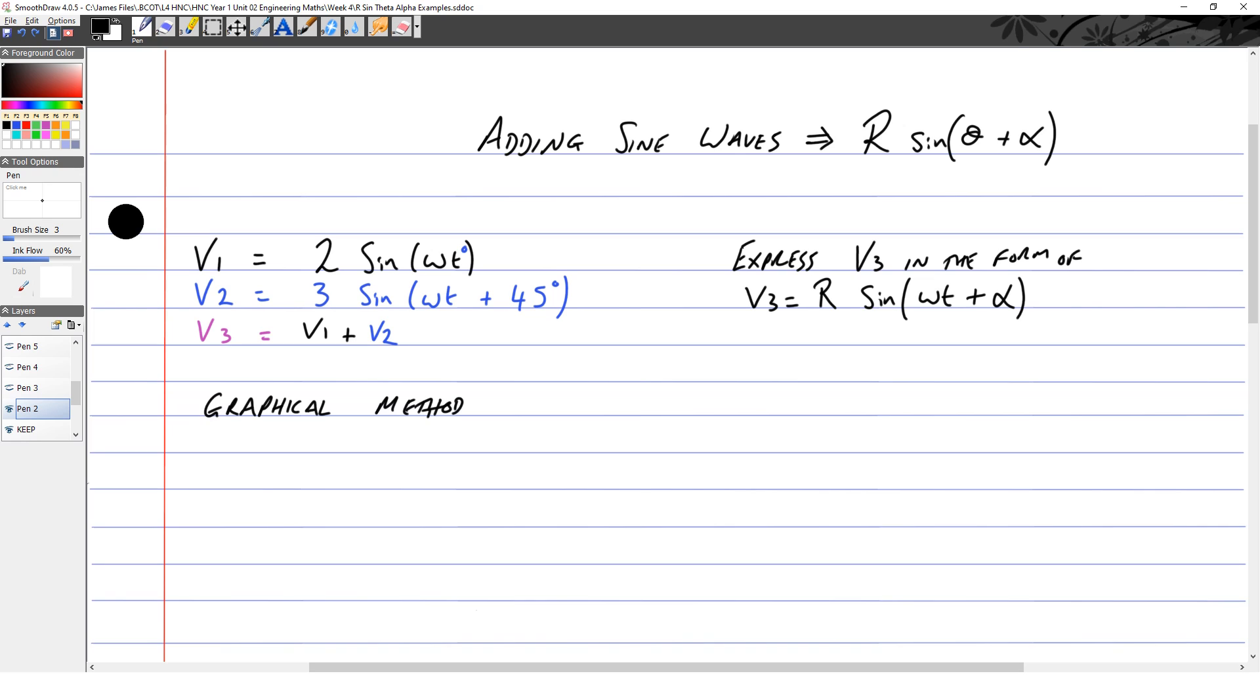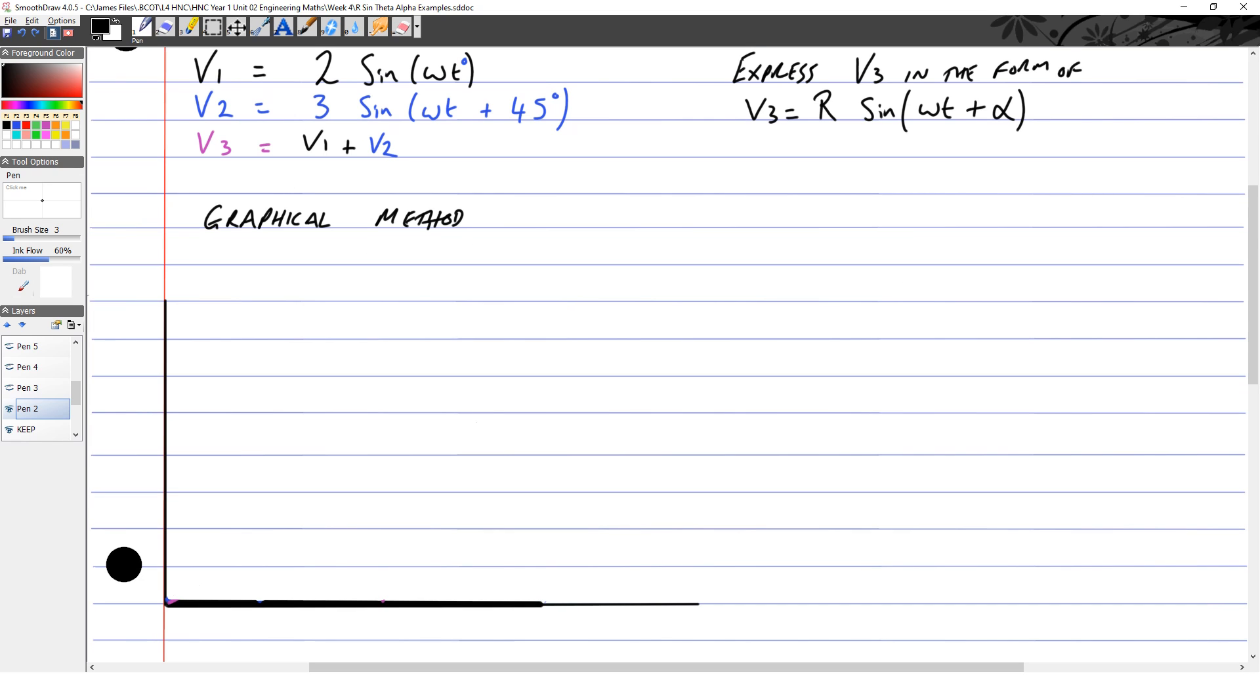We're going to do it with the graphical method first. There's where we're going to put our graph, and I've written on V1, which is two units long, with no phase shift, the black line.